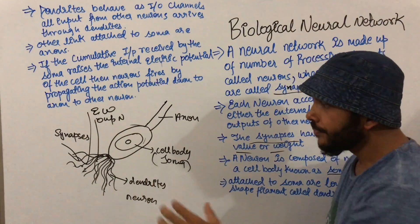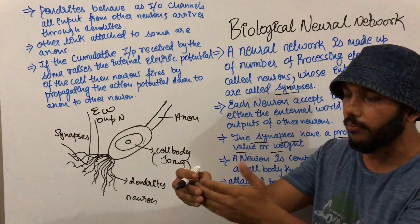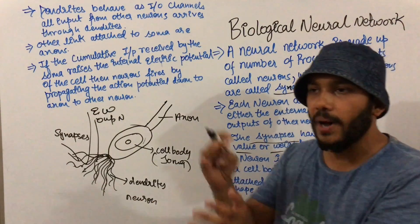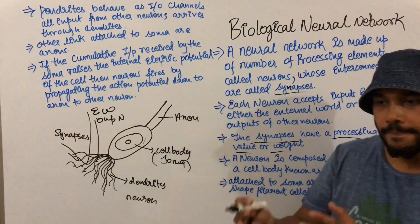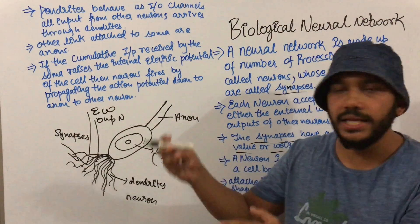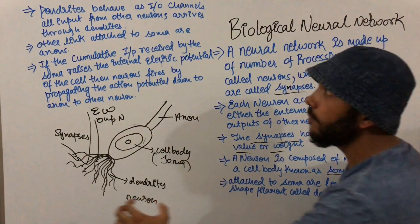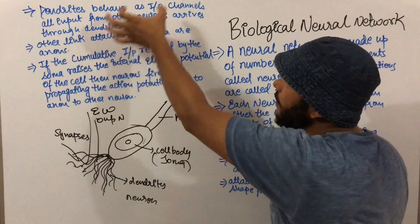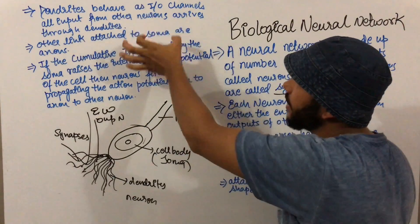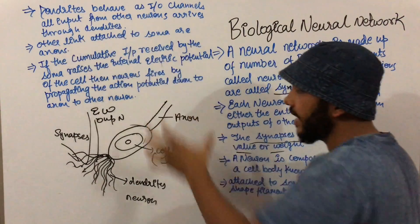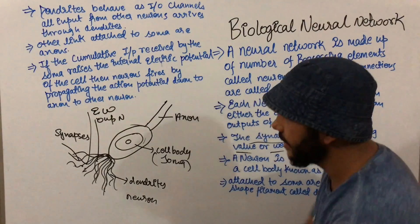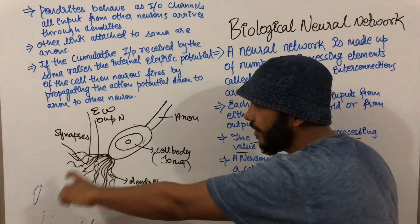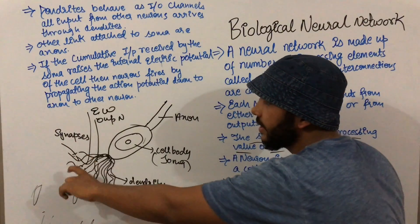As we talked about, information is processed from the external world — input is given to the neuron, and this neuron passes the information, like there is pain in the tip of a finger, to other neurons in the form of input. Dendrites behave as an I/O channel — all input from other neurons arrives through dendrites. Whatever information is present in different neurons, this information will be passed through the dendrites.